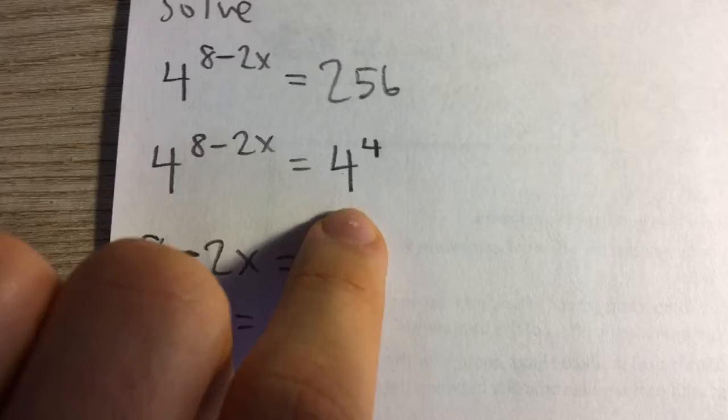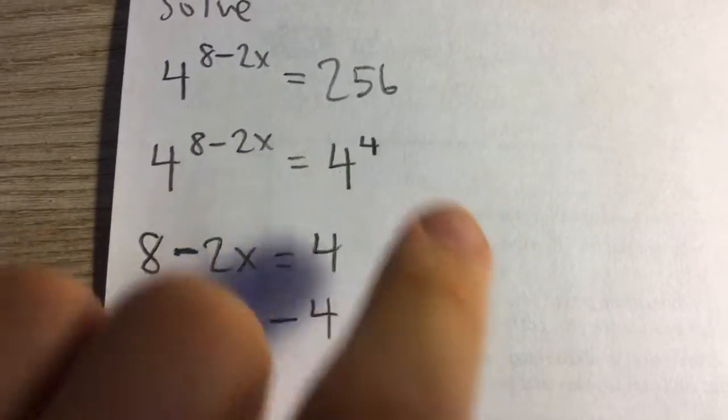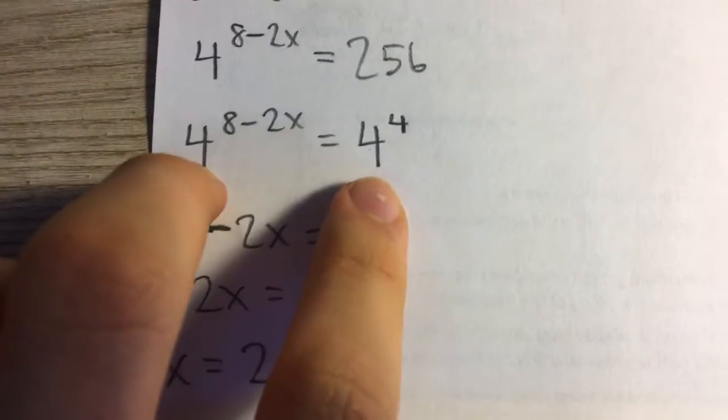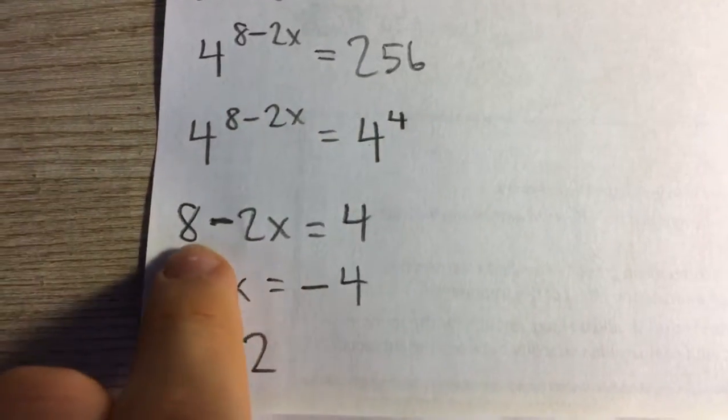256, if we write it with base 4, is 4 to the fourth power. Now that we have the same base, we can make their exponents equal.